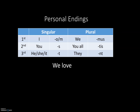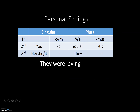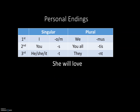Let's see how this looks in practice. 'We love' is present tense, so we take our stem and find our ending: AMA + MUS = AMAMUS, 'we love.' For the imperfect, 'they were loving' — we take the stem, add the signifier BA, then the ending NT: AMABANT.